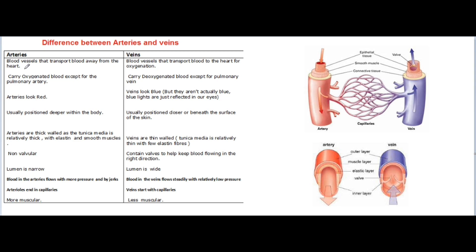Arteries are blood vessels that transport blood away from the heart. Veins are blood vessels that transport blood to the heart. Arteries carry oxygenated blood except for the pulmonary artery. Veins carry deoxygenated blood except for the pulmonary vein. Pulmonary artery carries impure blood to the lungs for oxygenation; after that, pulmonary vein carries pure blood from the lungs to the heart.